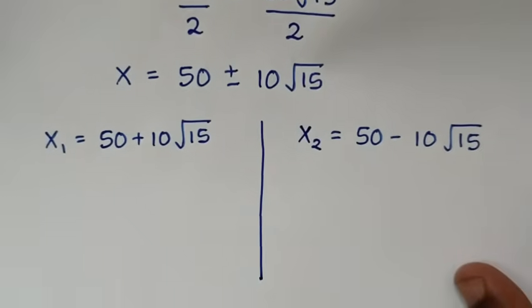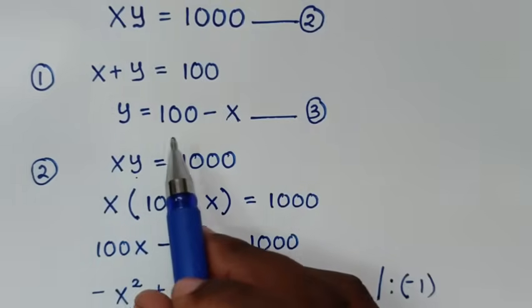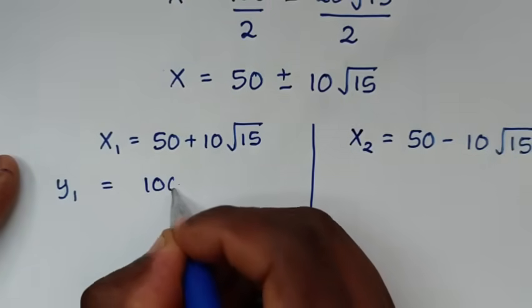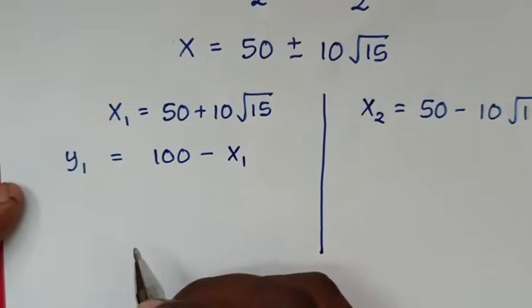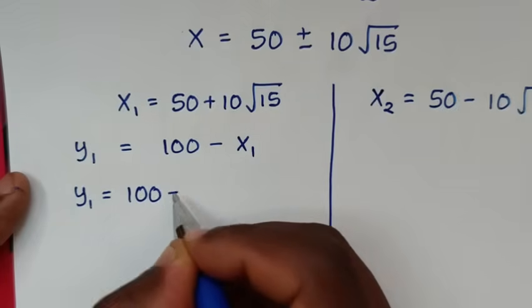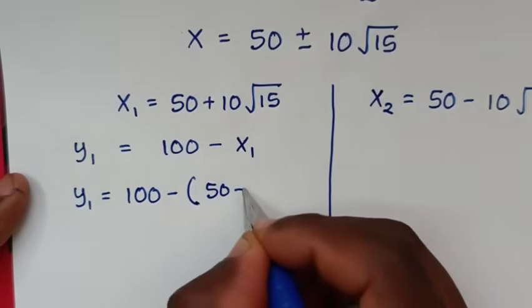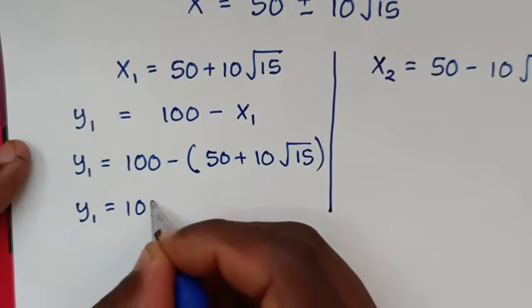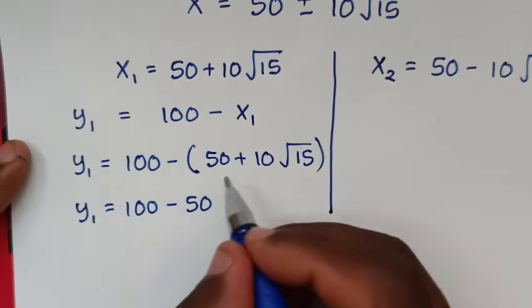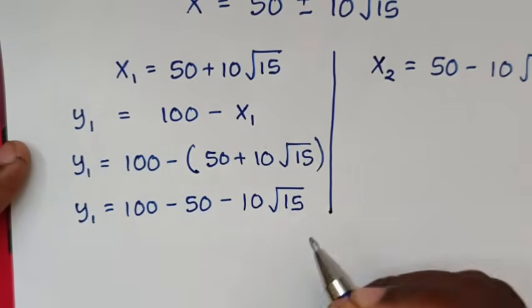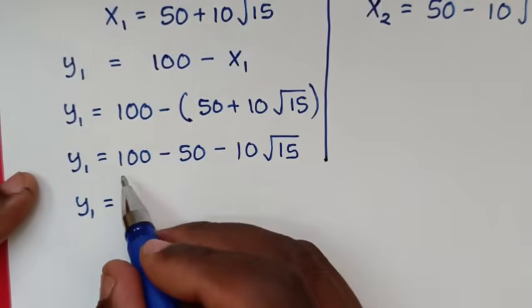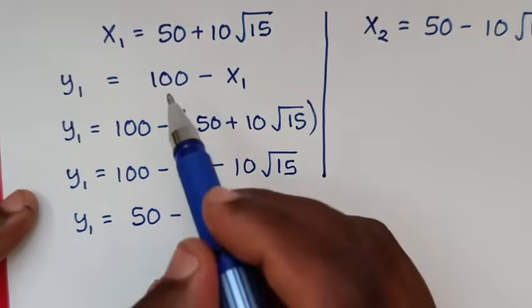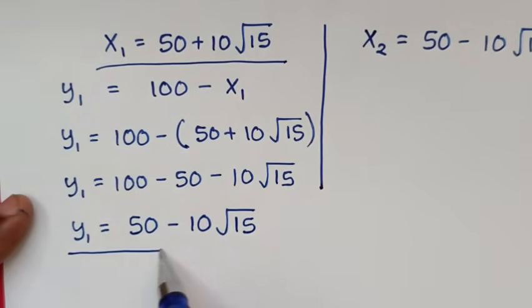Now, after finding the values of x, we recall from equation 3 that y is equal to 100 minus x. For the first solution: y1 equals 100 minus x1, which is 100 minus bracket 50 plus 10 square root of 15 bracket. Opening the bracket: y1 equals 100 minus 50 minus 10 square root of 15, so y1 equals 50 minus 10 square root of 15.